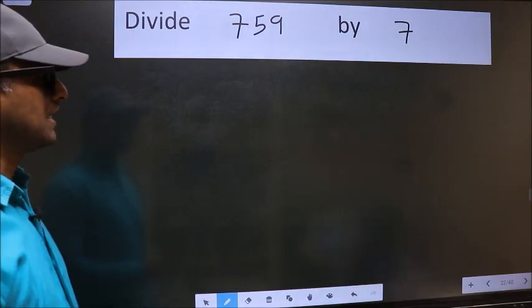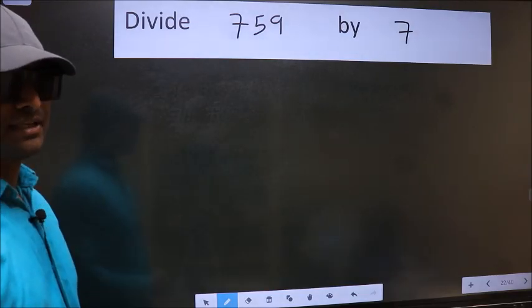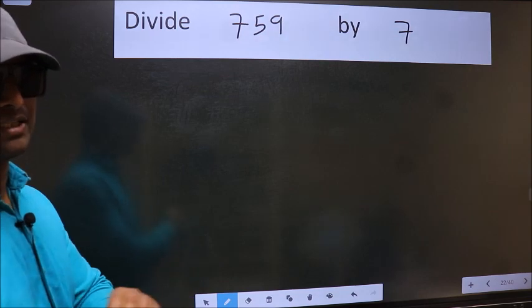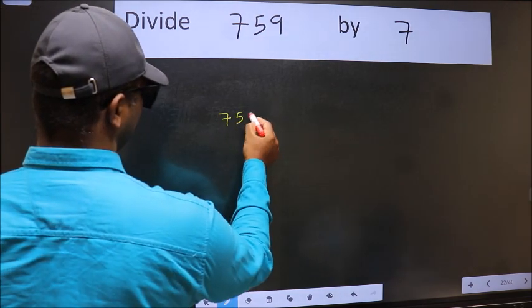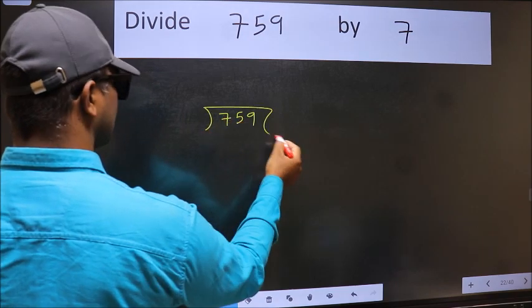Divide 759 by 7. To do this division, we should frame it in this way: 759 here and 7 here.